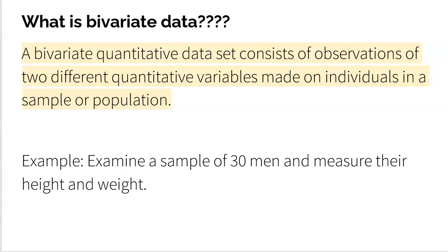So bivariate data, prefix bi means two, so we have a sample of people, whether it be a sample or maybe we have an entire population, and we measure them twice. We measure two different quantitative variables from each of the individuals. So a simple example could be, got 30 men, and we're going to measure their height and their weight.